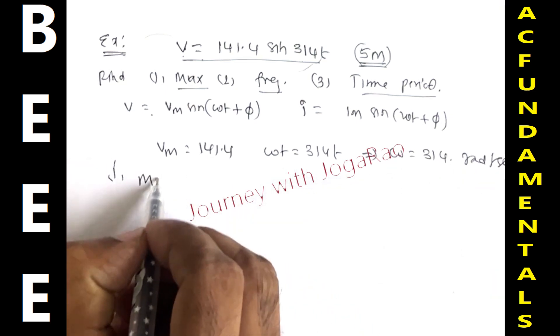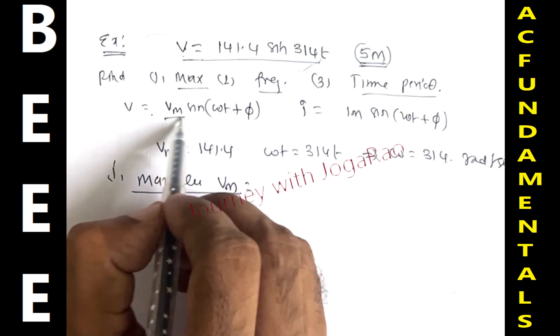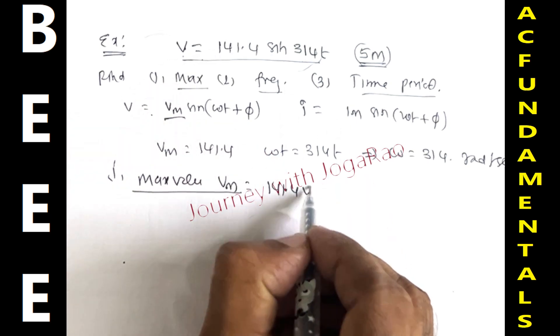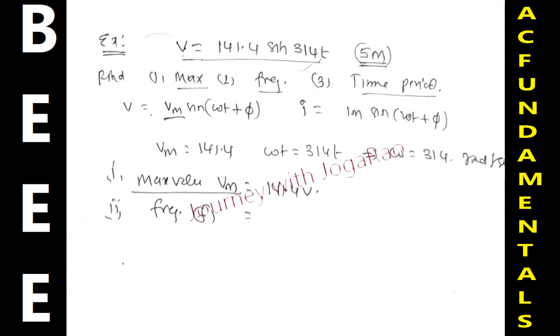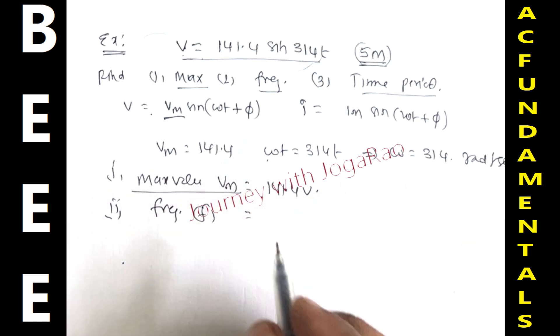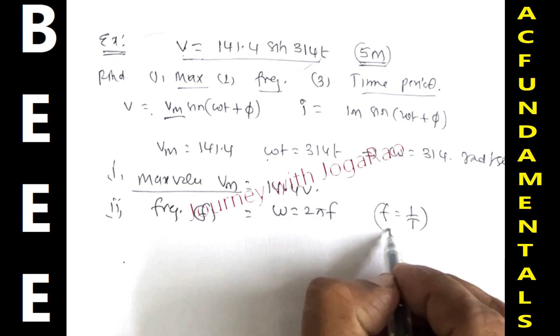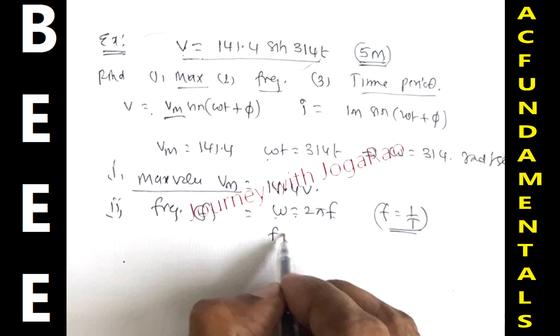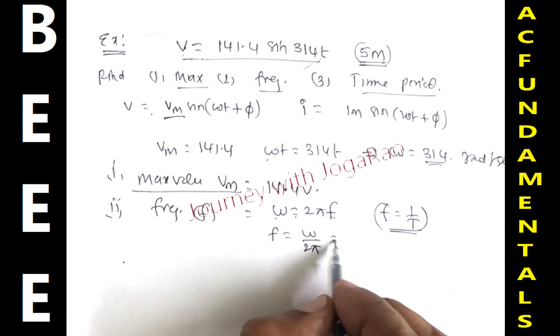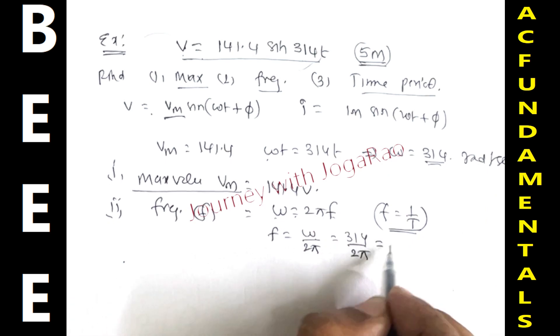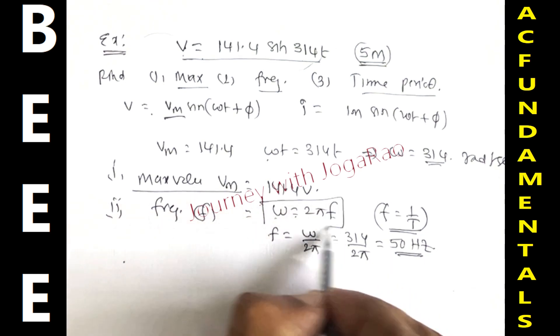First, find out maximum value Vm. Direct comparison gives Vm is equal to 141.4. Second, find out frequency f. Using the relation omega is equal to 2 pi f, we have f is equal to omega by 2 pi. So 314 by 2 pi equals 50 hertz.